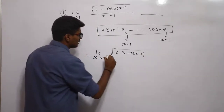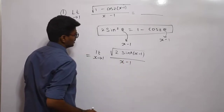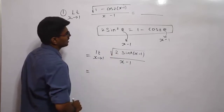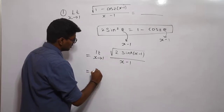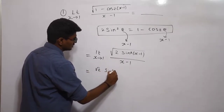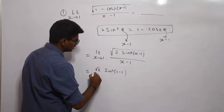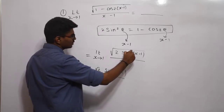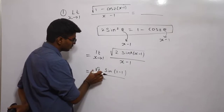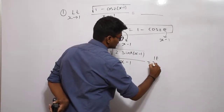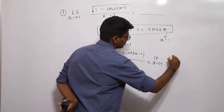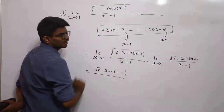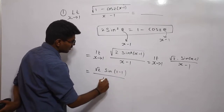Root of 2 sin squared (x minus 1) divided by x minus 1. Now I can apply the limit. The square inside and the square root outside get cancelled off. So this becomes: limit x tends to 1 of root 2 into sin(x minus 1) divided by x minus 1.